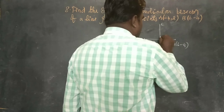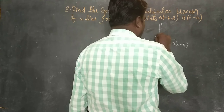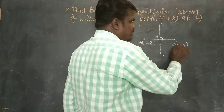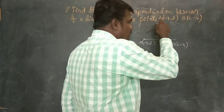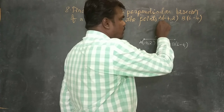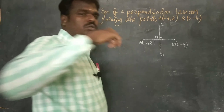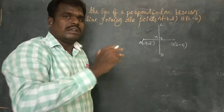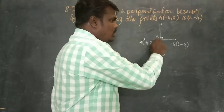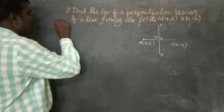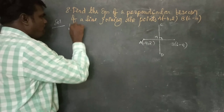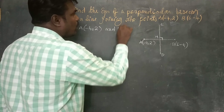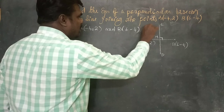CD is the perpendicular line. M is the midpoint of AB. The perpendicular bisector divides the line AB into two equal parts. The given points are A(-4, 2) and B(6, -4).